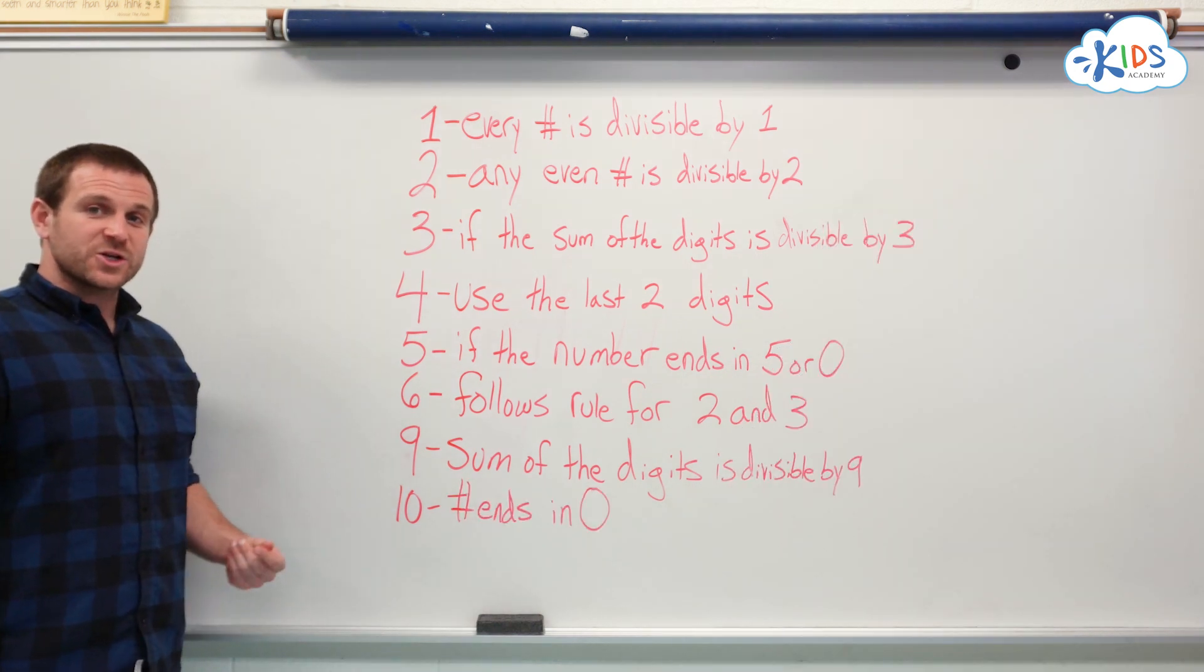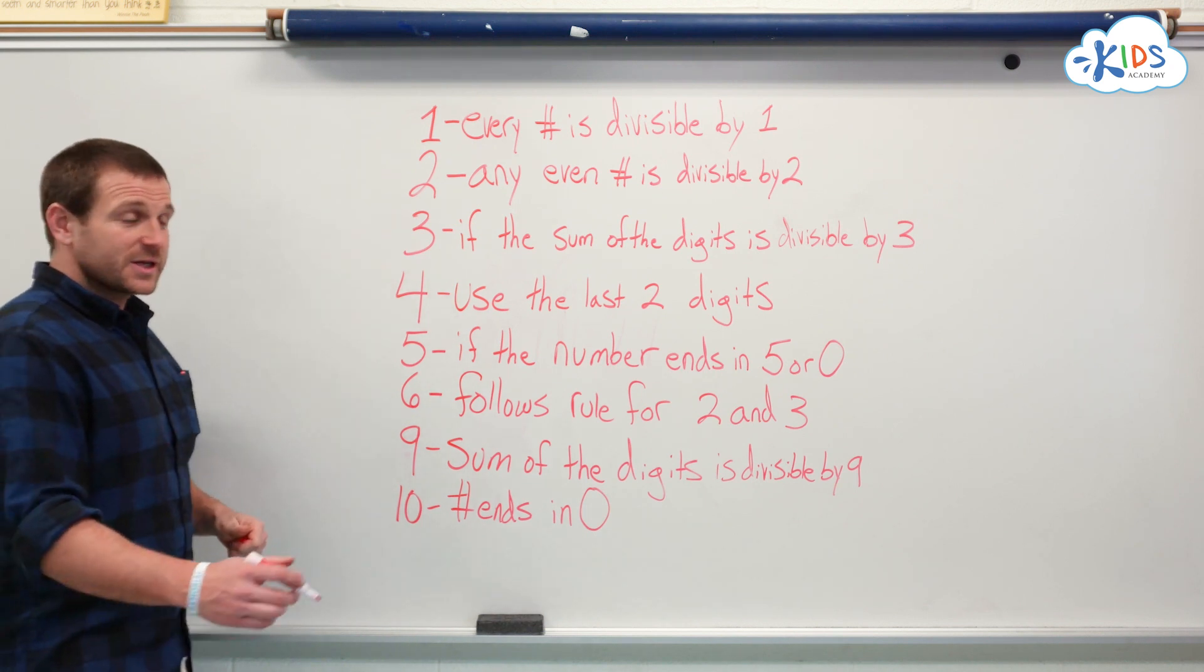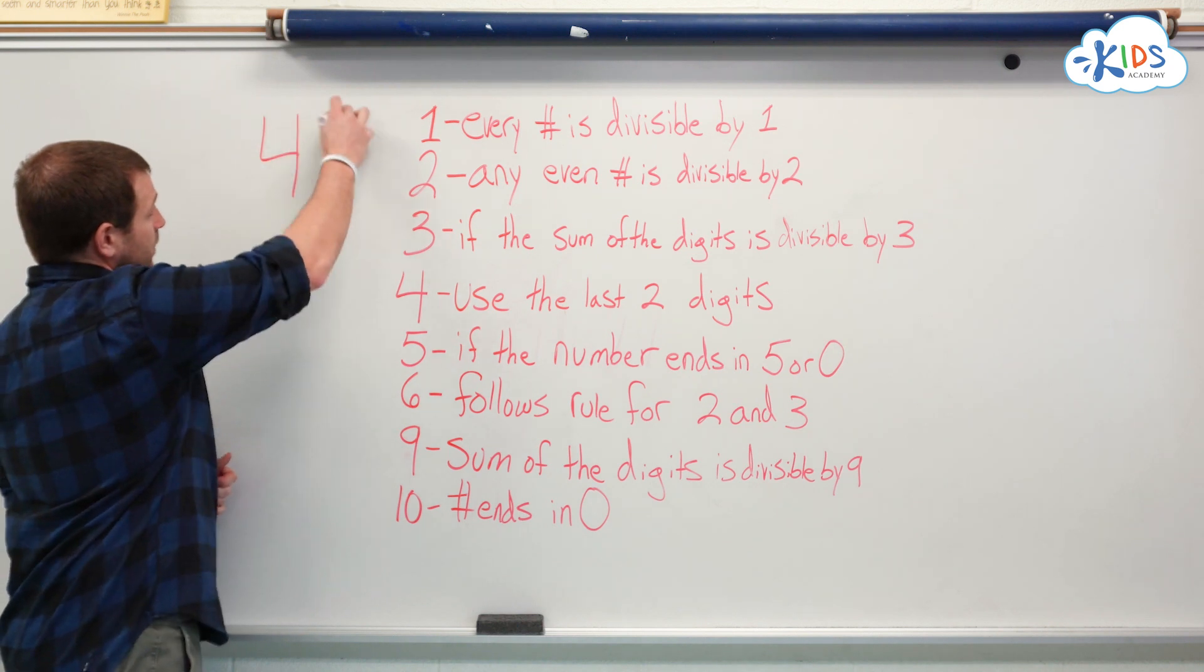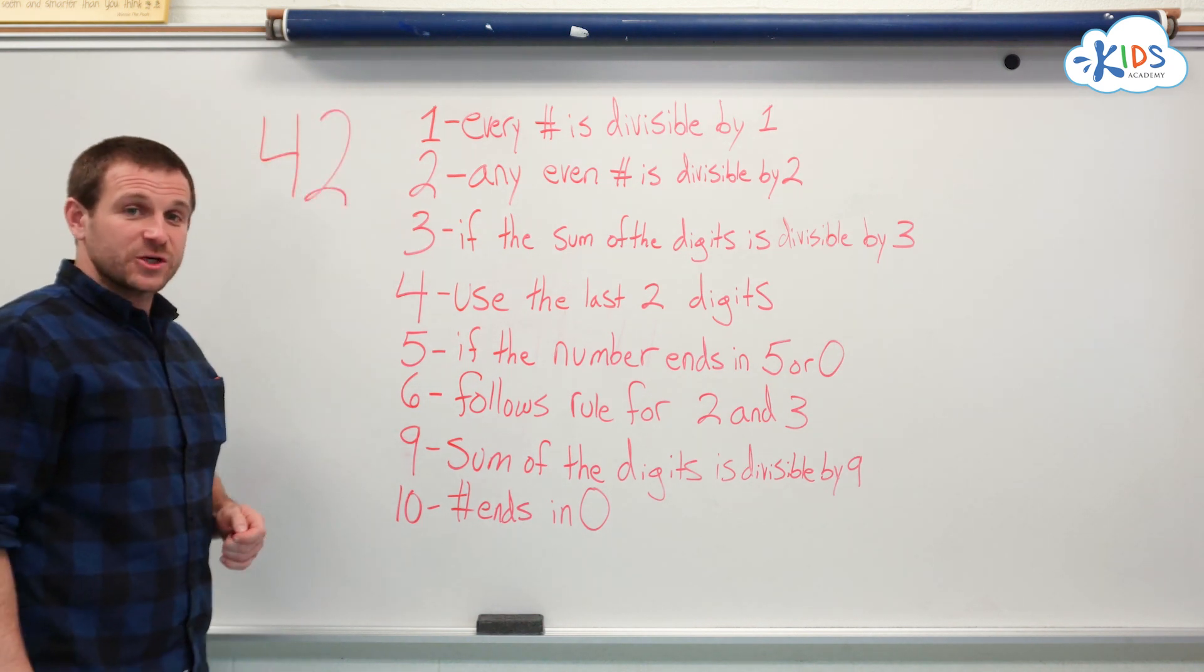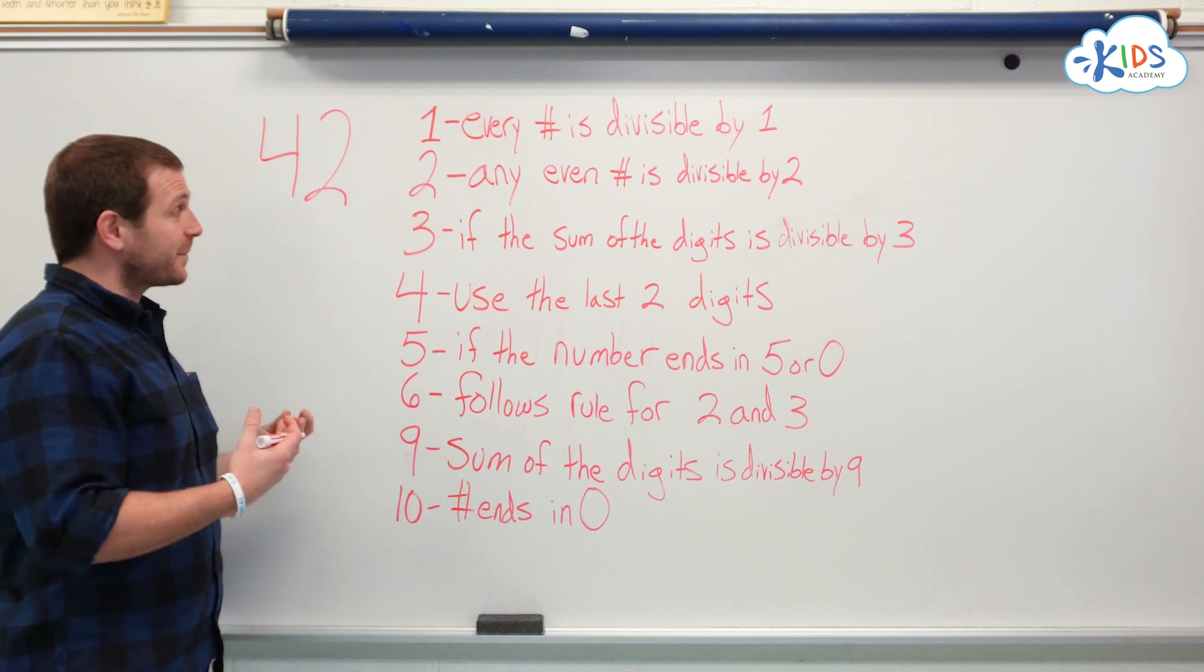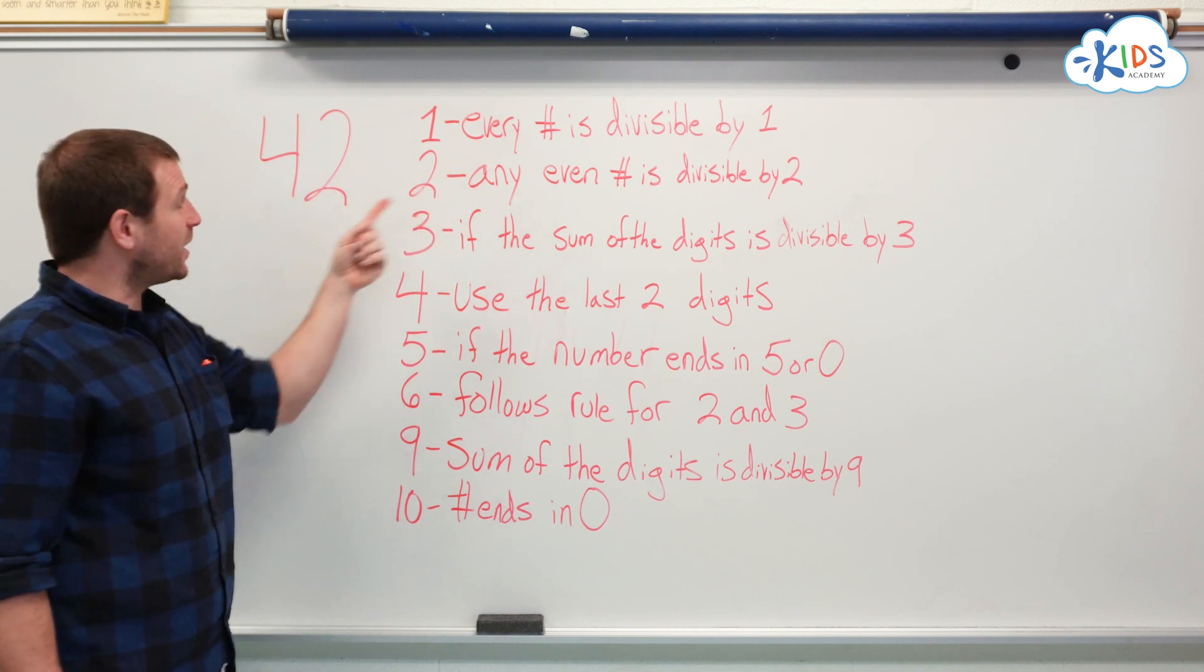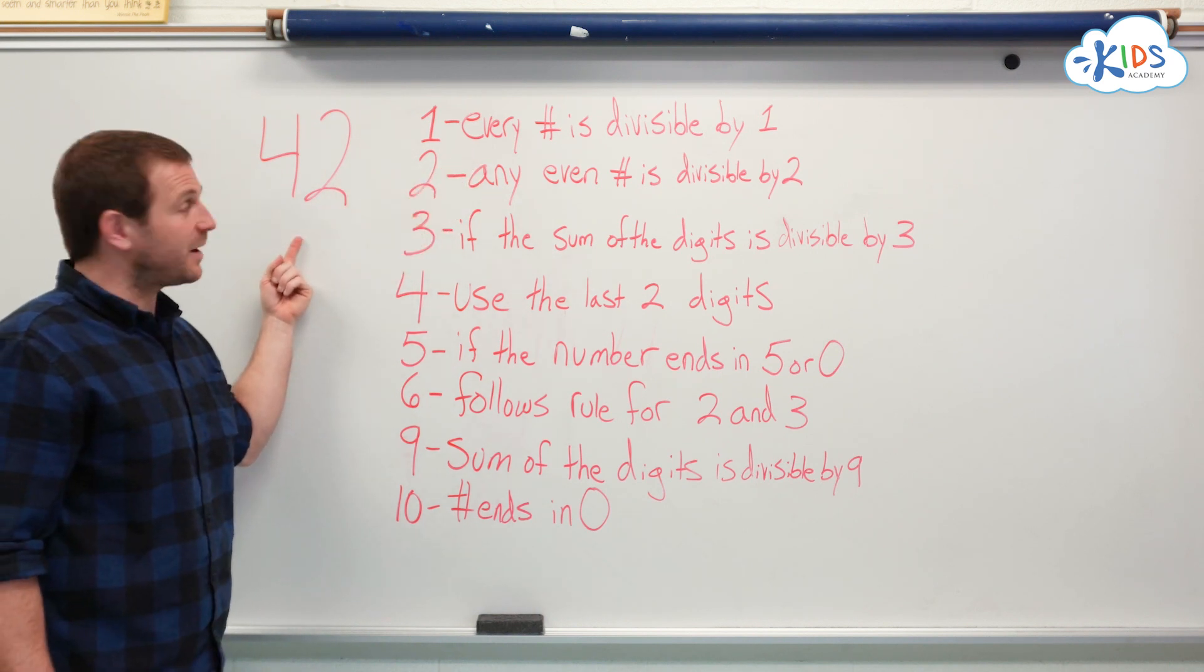Using these rules we can determine whether or not a number is divisible by any of these numbers. Let's try one together. The number is 42. So we're going to work our way through here and determine what numbers 42 is divisible by. First, 1. Every number is divisible by 1. Therefore, 42 is divisible by 1.